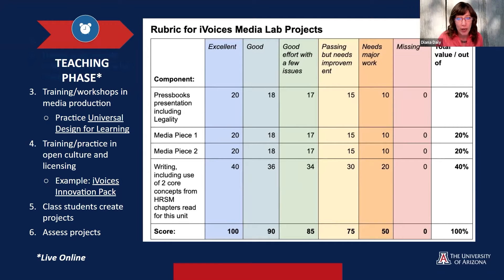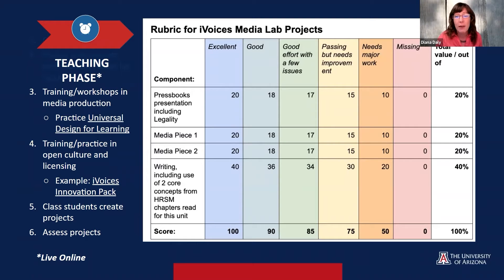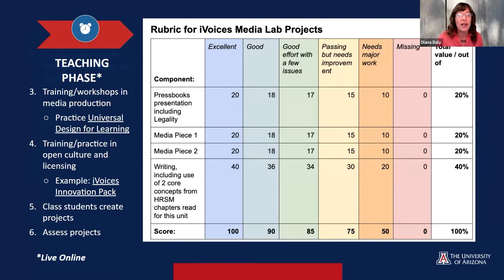Our general rubric prioritizes accessibility. We teach the principles of Universal Design for Learning, so instructions are in multiple formats such as videos, writing, and live workshops, with ample repetition. We have lots of workshops and help not only on producing the projects but on licensing and open culture, including guest presentations by Cheryl as our open education librarian. We also offer students shortcuts for integrating Creative Commons content, such as our iVoices Innovation Pack — a playlist of short CC-licensed tracks made by one of our media lab workers, Gabe Stoltz.